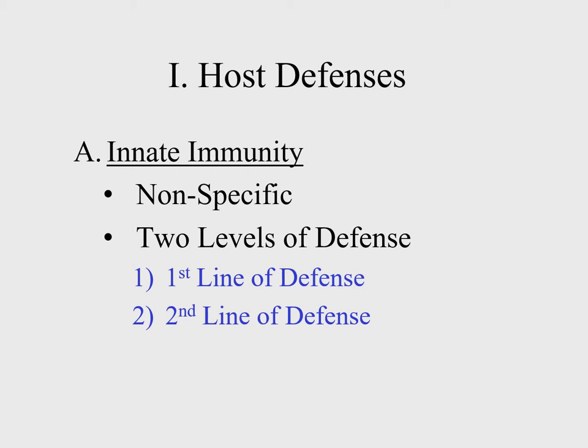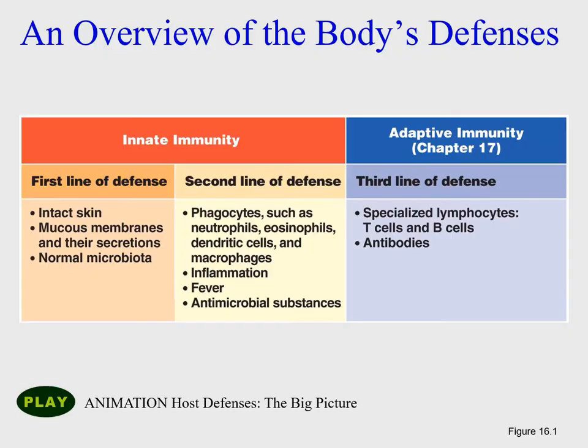Innate immunity involves the first two lines of defense. The first and second lines of defense will be compared to the third line of defense, which will be covered in chapter 17. Innate immunity is comprised of both the first and second lines of defense and their various components, while chapter 17 covers adaptive immunity within the third line of defense.